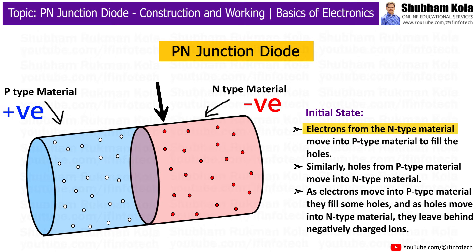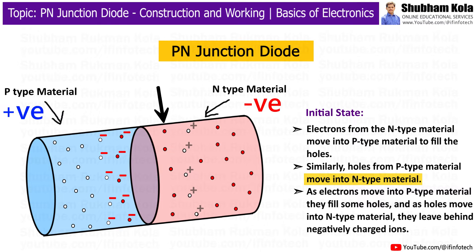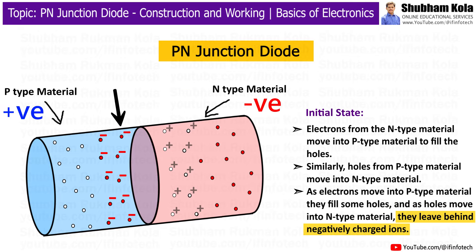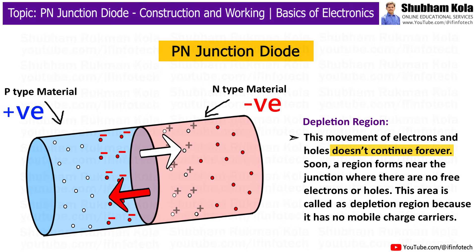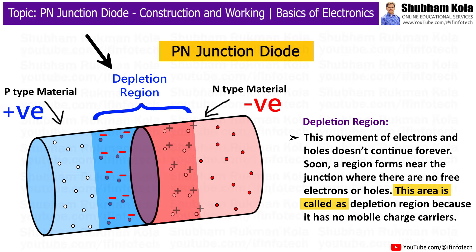At first, electrons from the N-Type Material move into the P-Type Material to fill the holes. Similarly, holes from the P-Type Material move into the N-Type Material. As electrons move into P-Type Material, they fill some holes, and as holes move into N-Type Material, they leave behind negatively charged ions. This movement of electrons and holes doesn't continue forever. Soon, a region forms near the junction where there are no free electrons or holes.